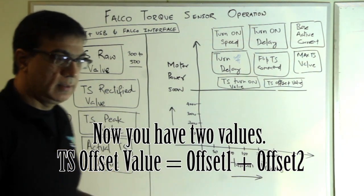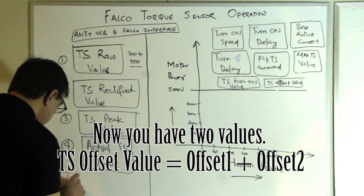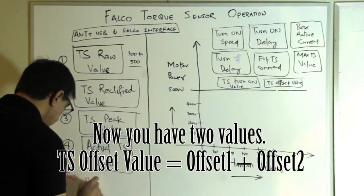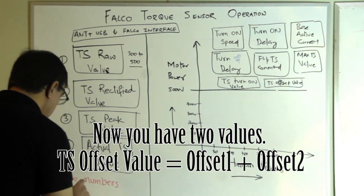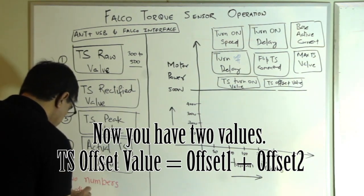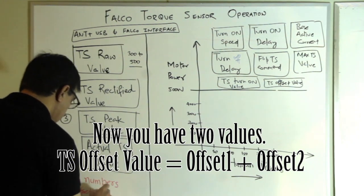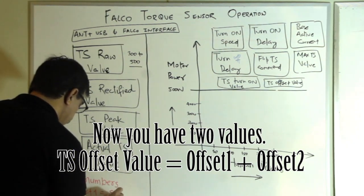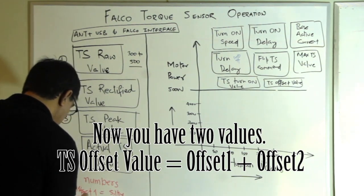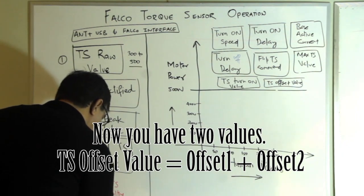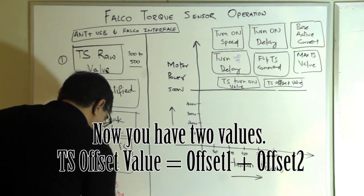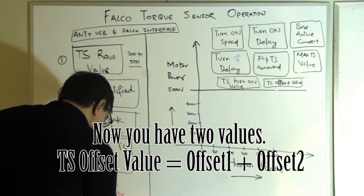So you get two offsets from this exercise, two numbers. We can call it offset one for sitting and offset two for no load throttle operation.